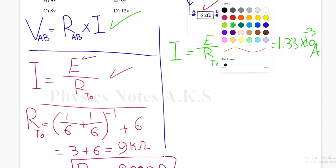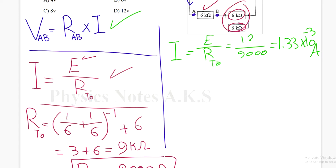Let me use this color. So VAB, I'm going to write the formula again, equals RAB × I.